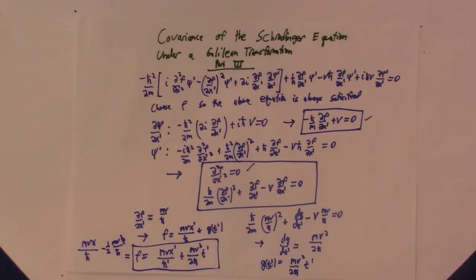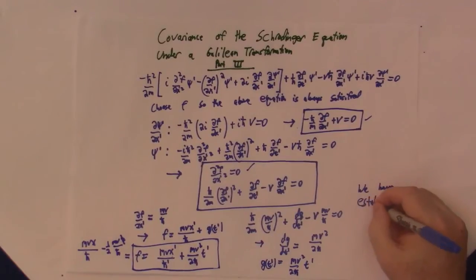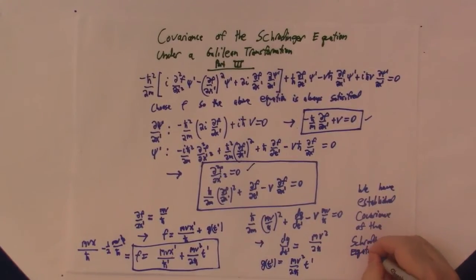So we've shown that we can find a function f to transform psi and psi prime so that the Schrödinger equation will have the same form in both reference frames. So we've established the covariance of the Schrödinger equation under a Galilean transformation.